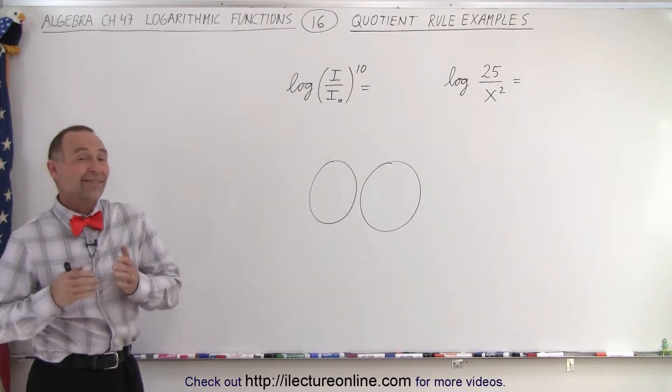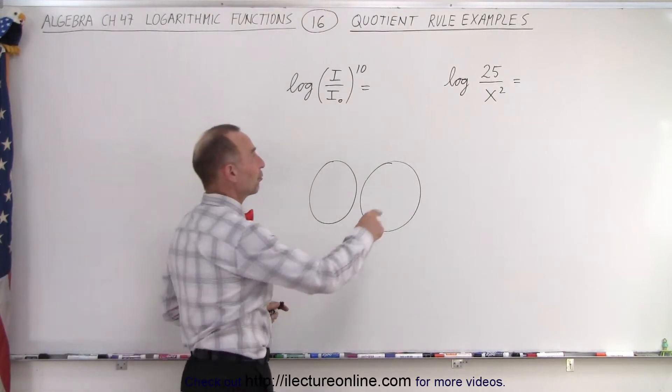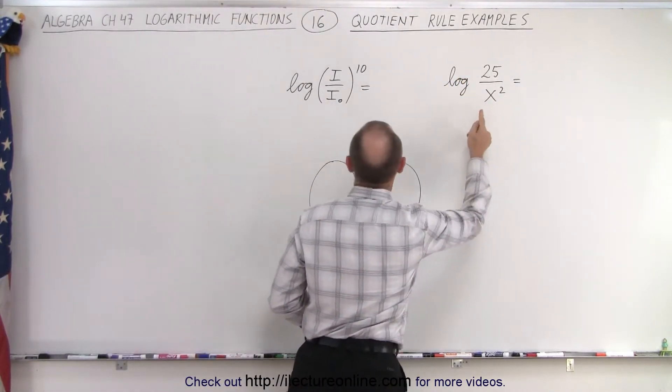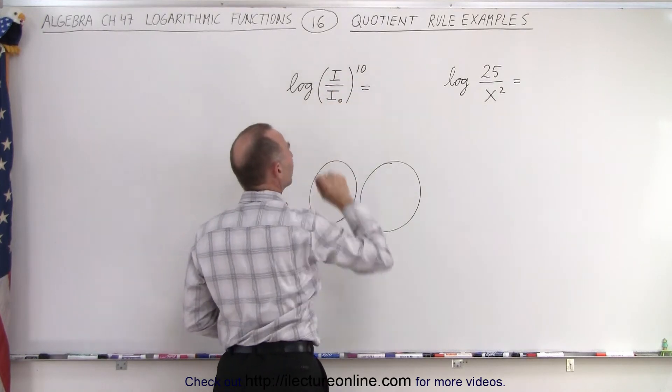Welcome to Electrum Online. Now let's take a look at the quotient rule. So here we have the log of 25 divided by x squared, and here we have the log of i divided by i sub naught, all of it raised to the 10th power.